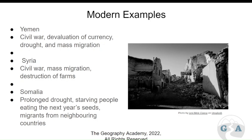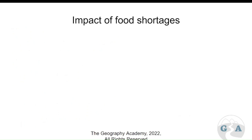Somalia then — prolonged droughts. Having long periods of drought has people starving, so often eating seeds for next year, which will obviously decrease the chances of more food production in the following year. A lot of the soil gets impacted, dried up and becomes infertile too. And we see lots of migration into neighboring countries because of that.